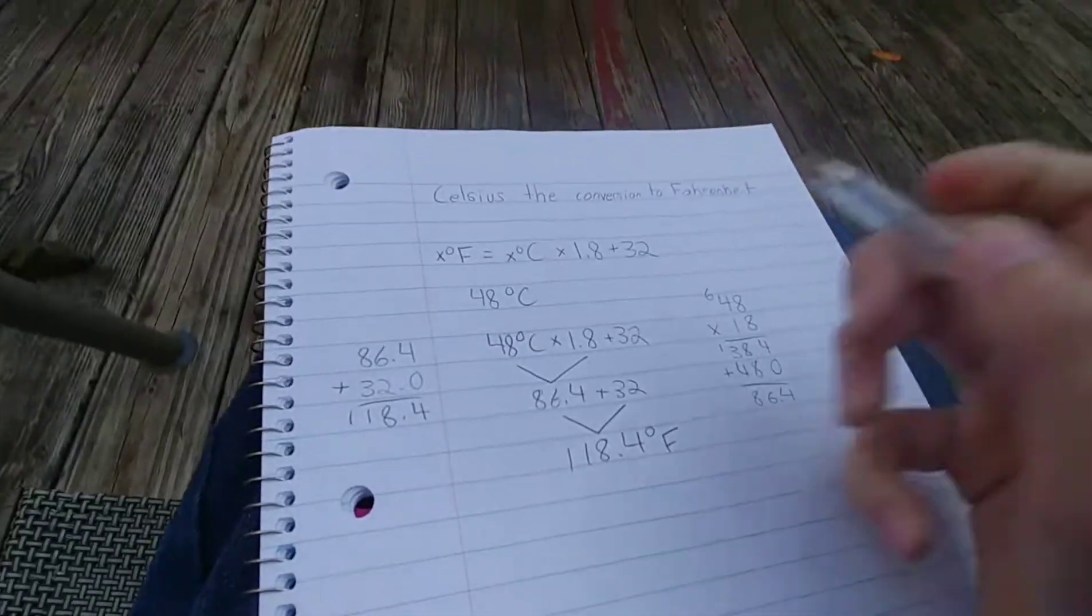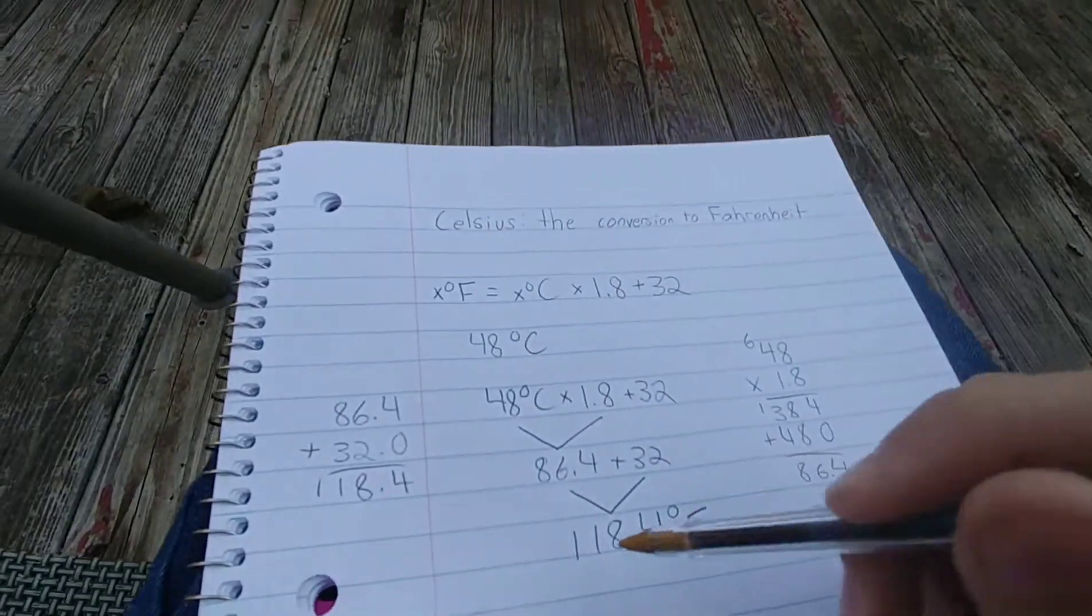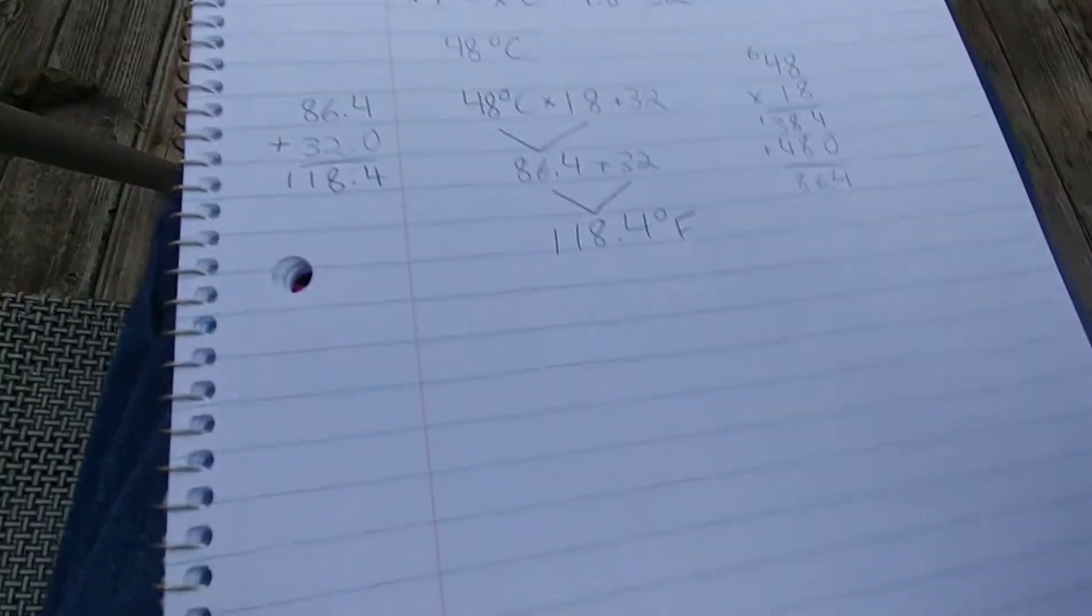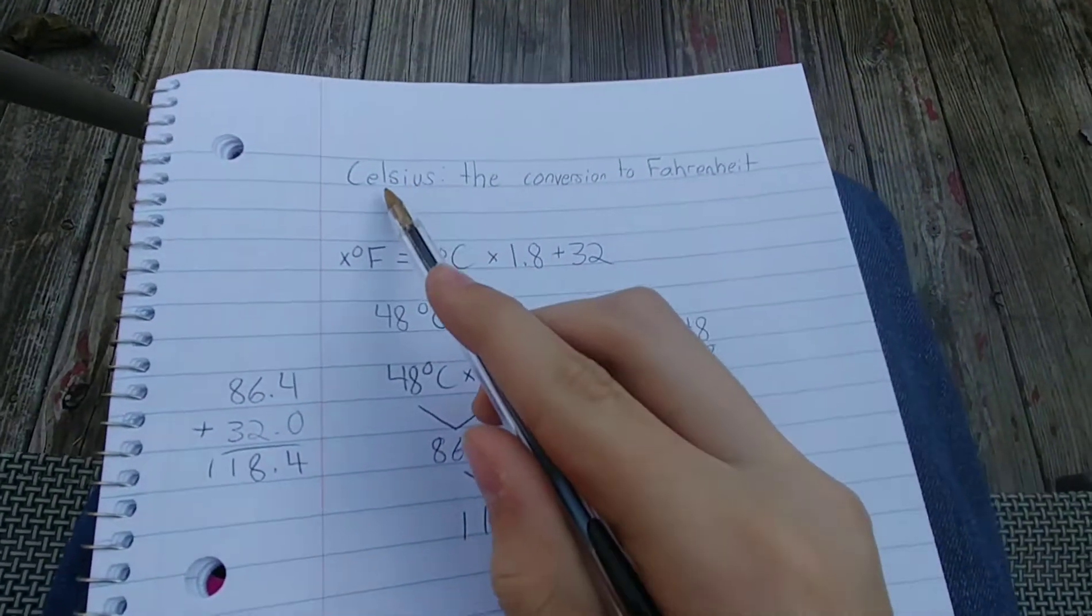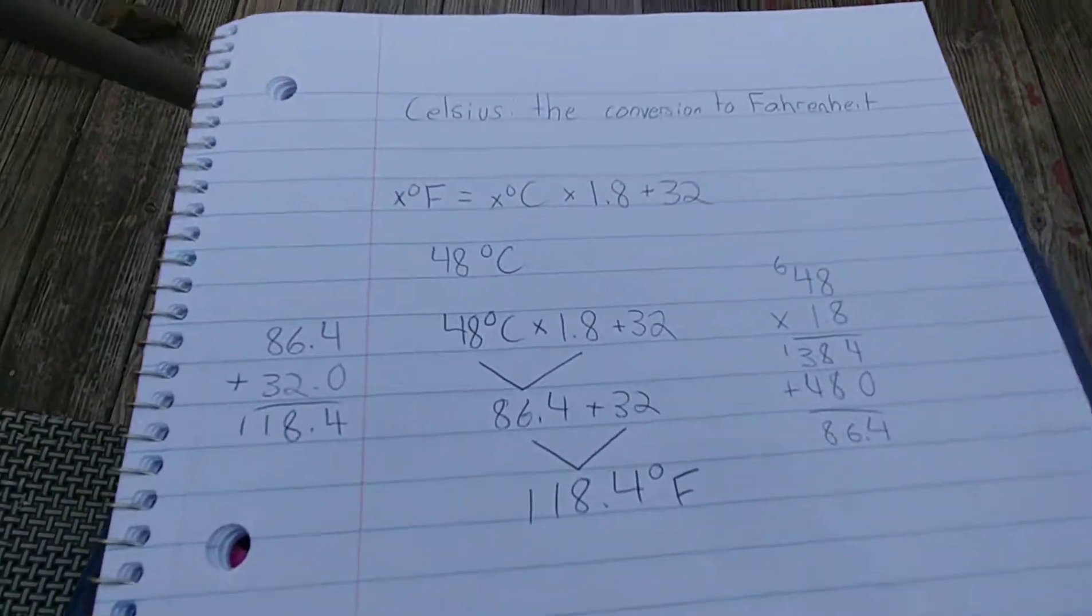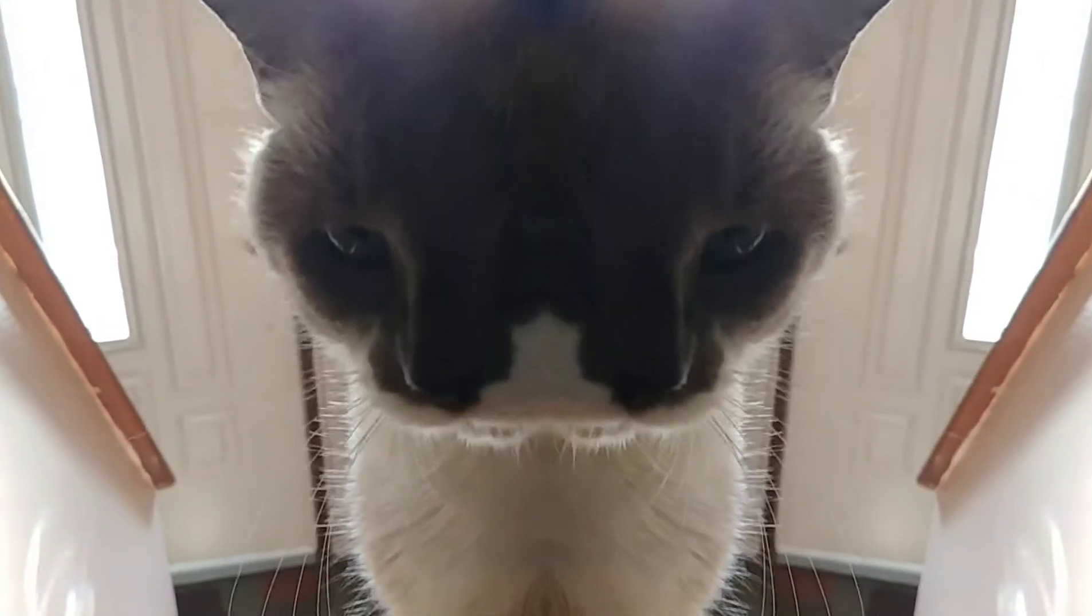And there you have it, folks. 48 degrees Celsius is equal to 118.4 degrees Fahrenheit. And that's also how you convert Celsius to Fahrenheit. And that's just one example of a formula. Thanks so much. Now I can destroy those haters with my Fahrenheit facts.